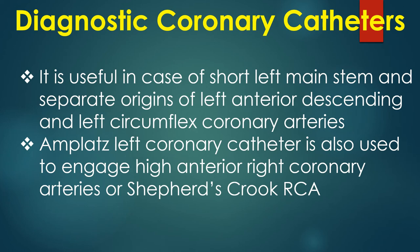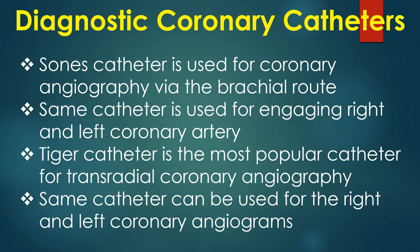The Amplatz left coronary catheter is also used to engage high anterior right coronary arteries, or Shepherd's Crook RCA. The Sones catheter is used for coronary angiography via the brachial route. The same catheter is used for engaging both the right and left coronary arteries.